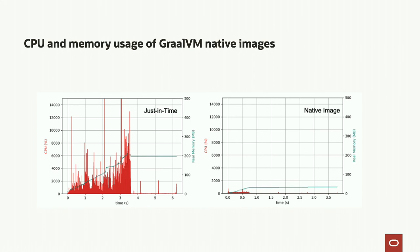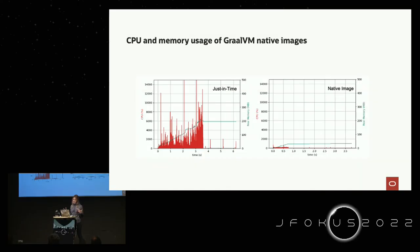Looking at the same application from a different angle — evaluating resource usage — the difference is also quite significant. On the right is the Micronaut application running in JIT mode, and on the right in native image mode. The red vertical lines measure CPU load and the blue horizontal line is memory usage. In JIT mode the CPU is quite busy for about 3.5 seconds — loading classes, parsing, interpreting, and starting compilation.